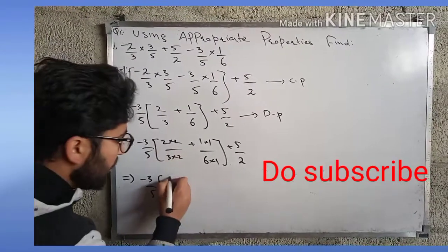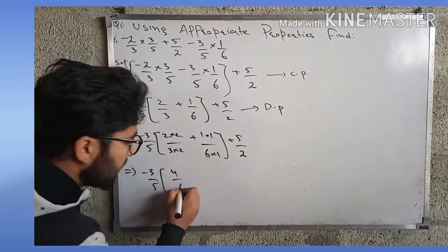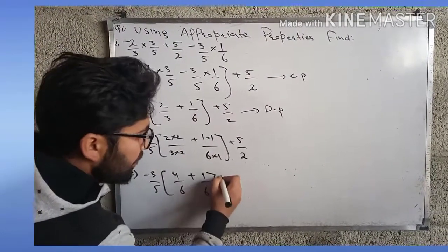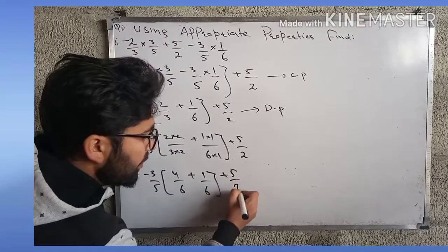2 × 2 is 4, 3 × 2 is 6, plus 1 × 1 is 1 divided by 6, plus 5/2.